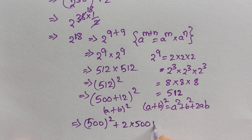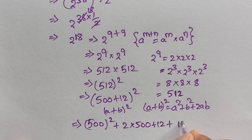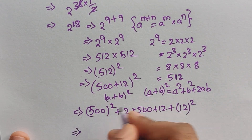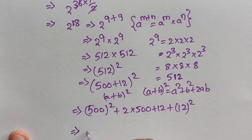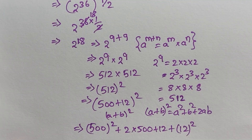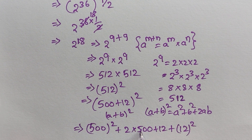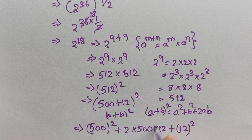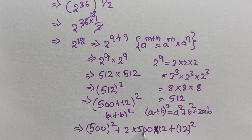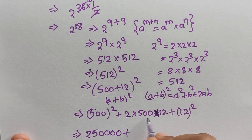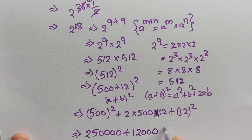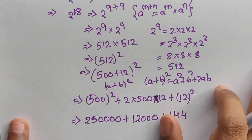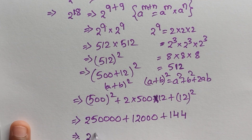Using this formula, with a = 500 and b = 12: we get 500^2 plus 2 times 500 times 12 plus 12^2. So 500^2 equals 250000, 2 times 500 equals 1000, and 1000 times 12 equals 12000. Then 12^2 equals 144.